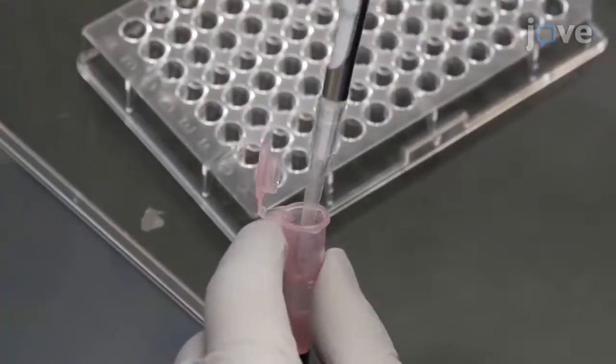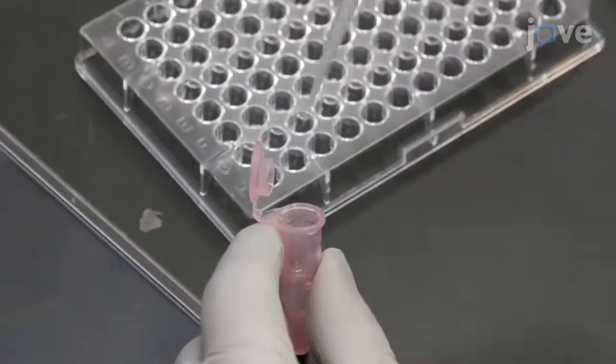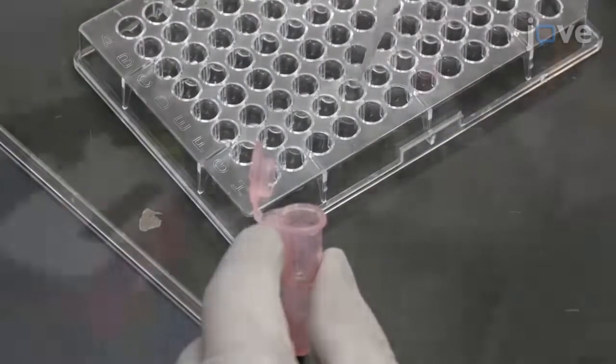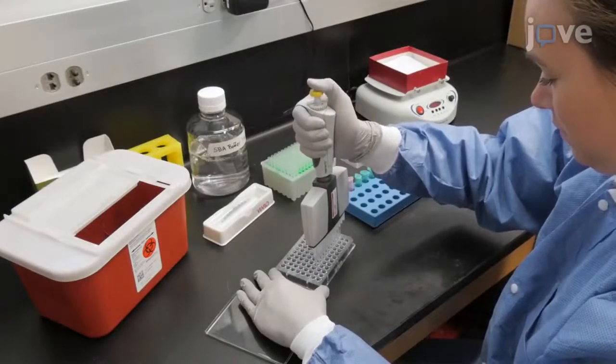Load 30 µL of each test sample in duplicate to row H of the assay plate. To begin performing 3-fold serial dilutions of the test samples, use a multi-channel pipette to remove 10 µL from wells 3H through 12H.